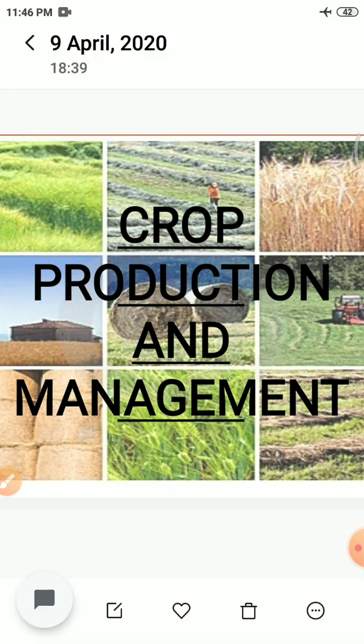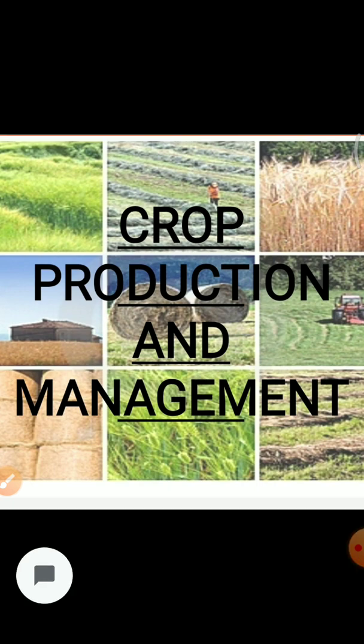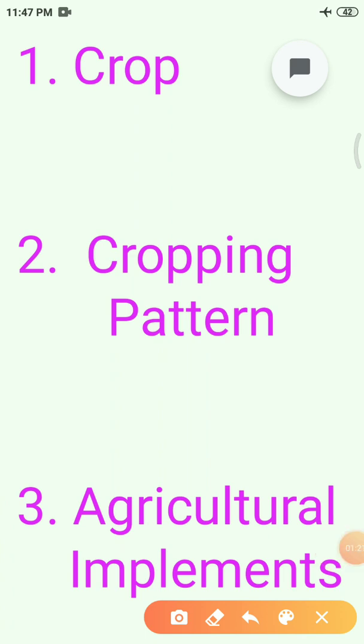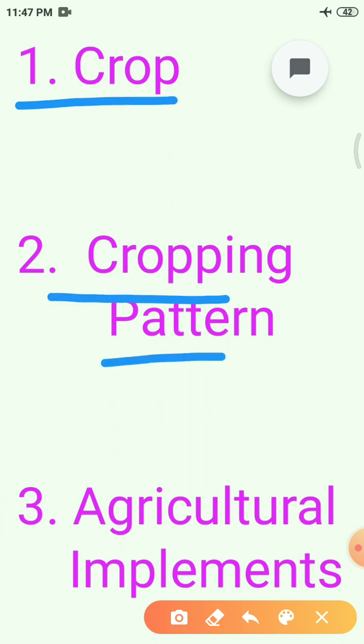We get our food from plants and animals both. To understand crop production, you should imagine yourself not as a student but like a farmer who is in the field. In today's class we will discuss 3 main topics: crop, main cropping patterns, and agricultural implements.